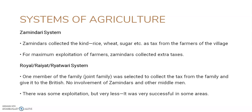Another system called the rayatwari system was introduced. In this system the zamindars were removed — no zamindars, no middlemen. Instead, one member of a joint family was selected by the British to collect the tax from the family land, and that tax was given directly to the British. With no zamindars involved, people were less exploited, because before they had to pay extra taxes and money to the zamindar. The rayatwari system became very successful in certain parts of India. It had its shortcomings, but it was still better than the zamindari system.